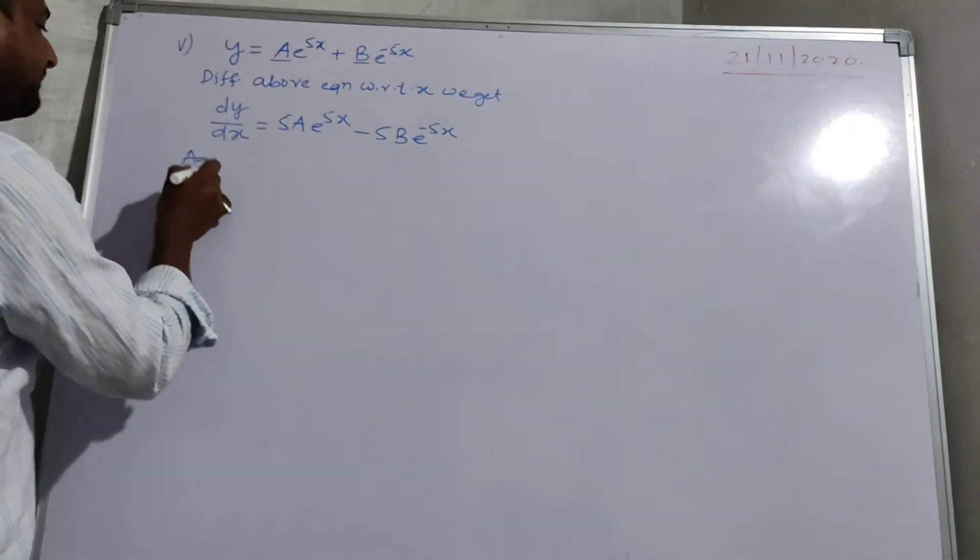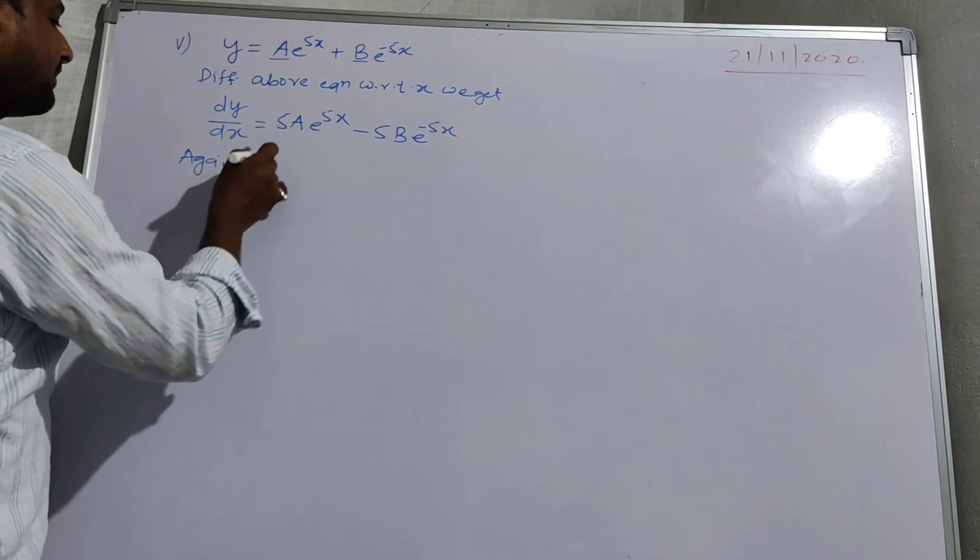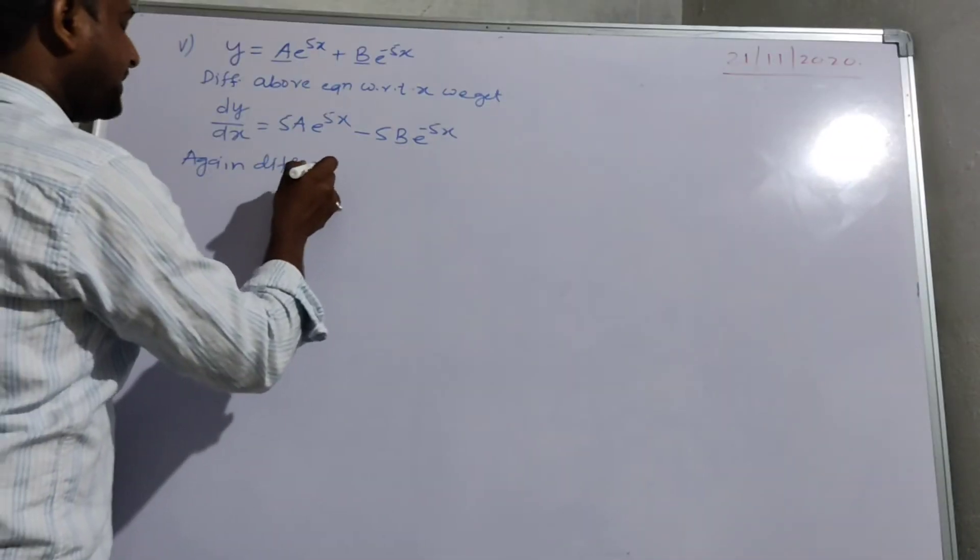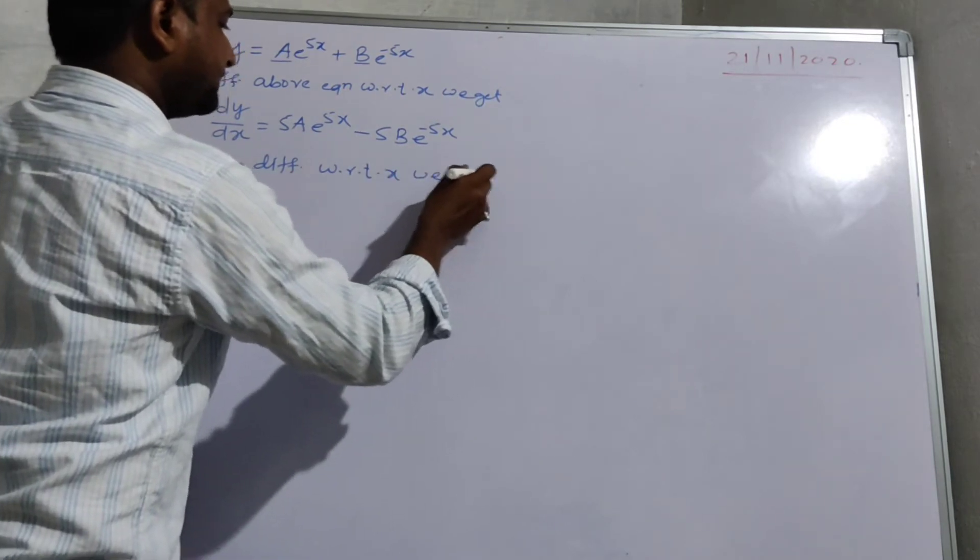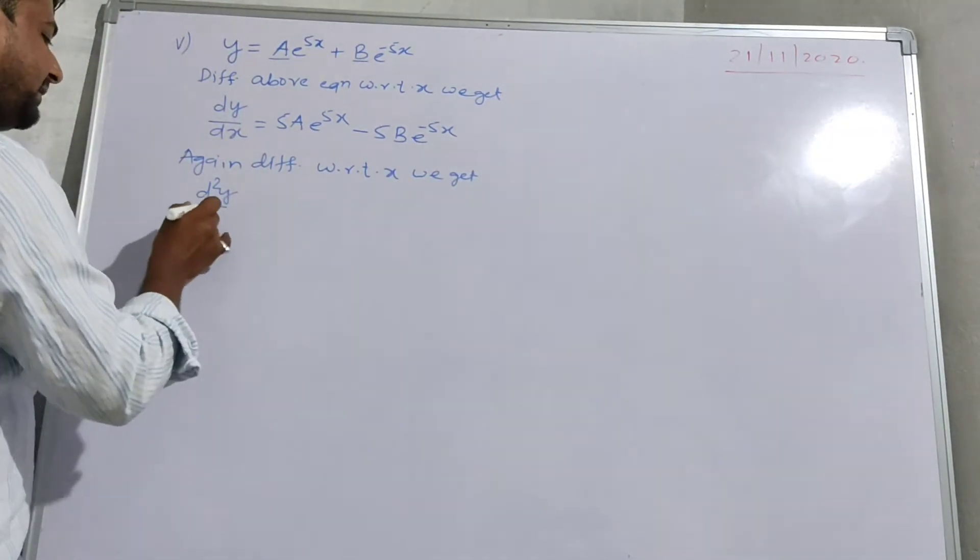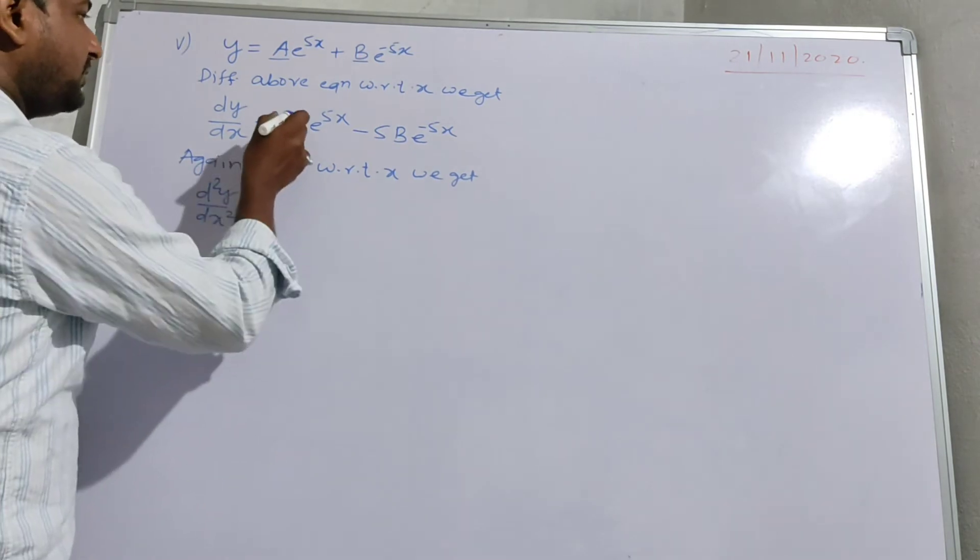Again differentiating with respect to x, we get d2y by dx square is equal to...